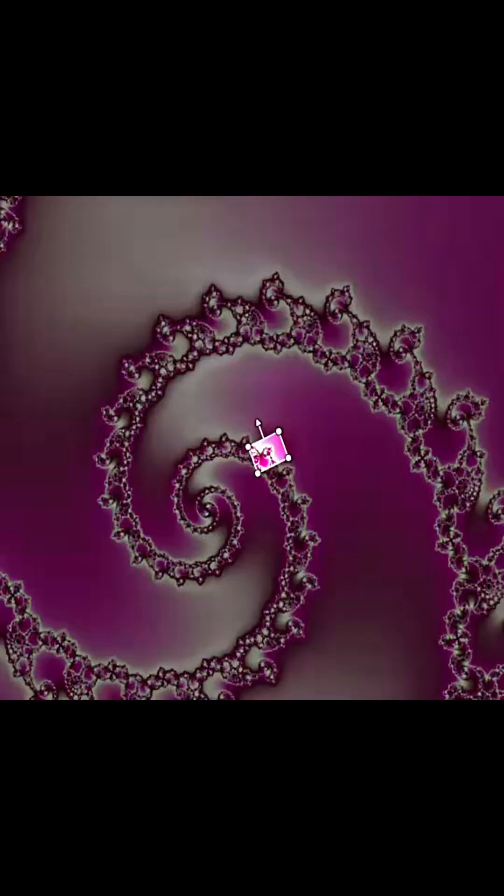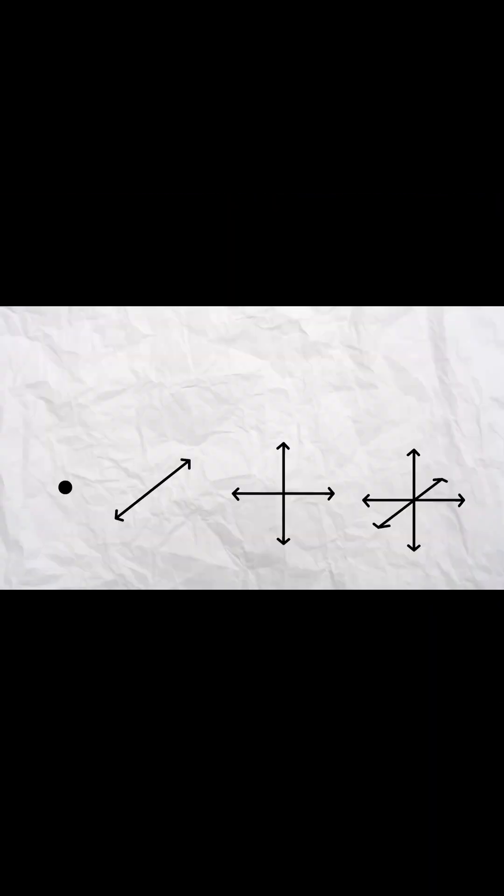In nature, fractals appear in snowflakes, branches, blood vessels, rivers, corals, and lightning. Everything seems to be made of smaller parts resembling the whole, as if the universe itself follows a hidden geometric code.